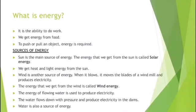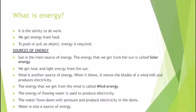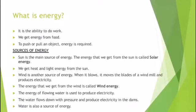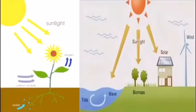The energy of flowing water is used to produce electricity. Water is another source of energy. The water flows down with pressure and produces electricity in the dams. You can see in the pictures that light energy is used in various ways. Plants prepare their food by the use of light.